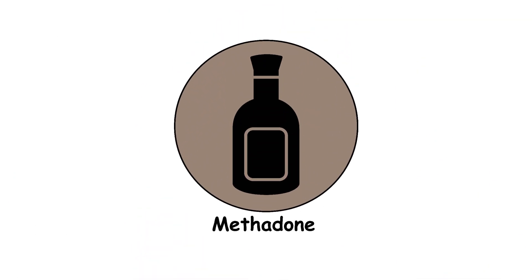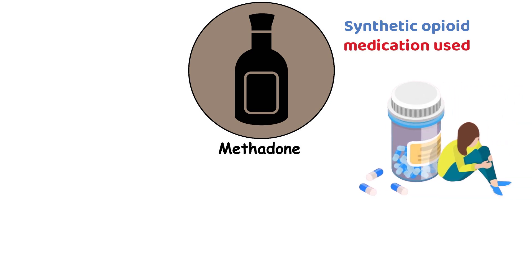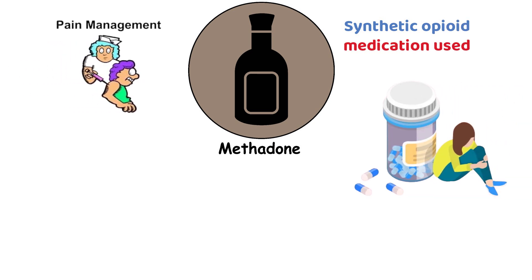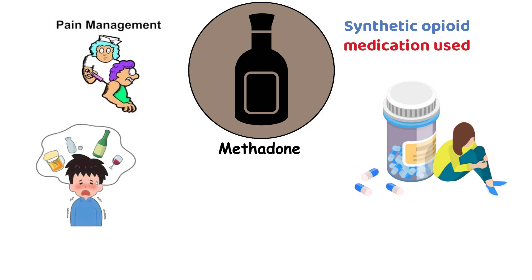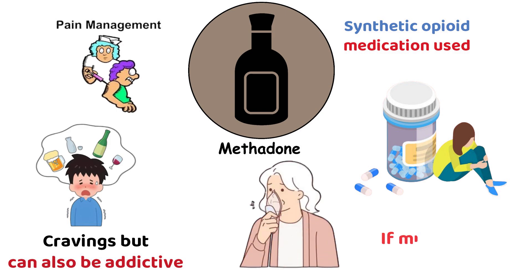Methadone is a synthetic opioid medication used to treat opioid addiction and manage pain. It helps reduce withdrawal symptoms and cravings, but can also be addictive and cause respiratory depression if misused.